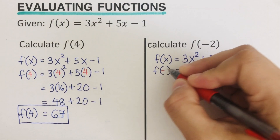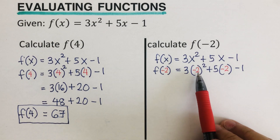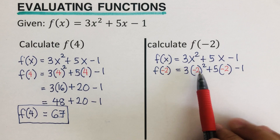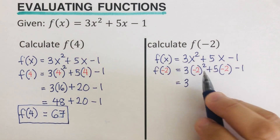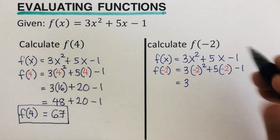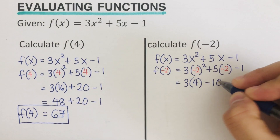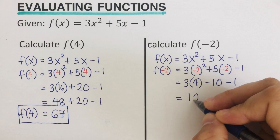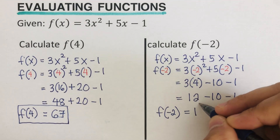Since we're evaluating at negative 2, I'll write −2 in all of the parentheses. Here's the key point: if you don't write parentheses, you might incorrectly think it's negative 4. So we have 3 times (−2)² = 3 times 4 = 12, plus 5 times (−2) = −10, minus 1. So f(−2) = 12 − 10 − 1 = 1.